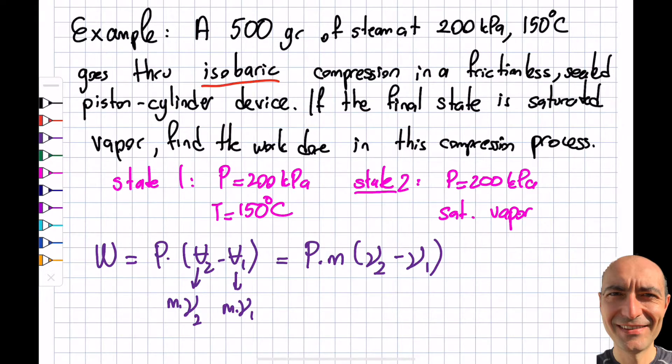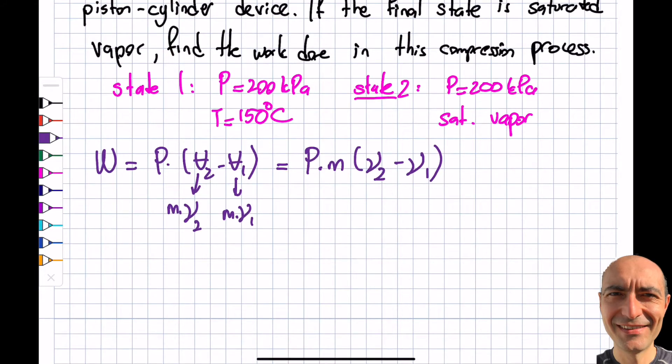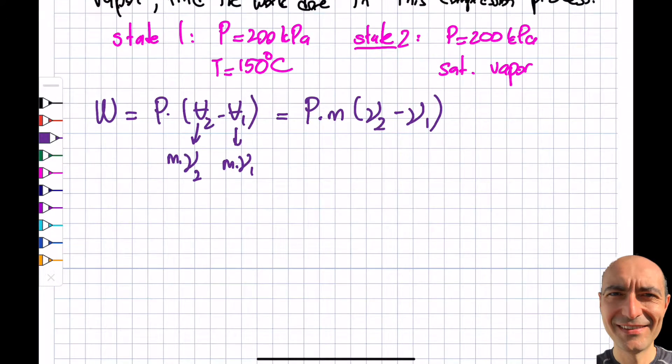What I'm going to do is use the tables at the back of the book to find specific volume 2 and specific volume 1. Let's start with state 1. Actually, state 2 is easier. Here is the question: how am I going to proceed?